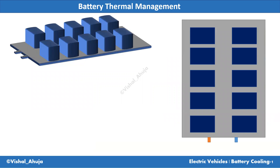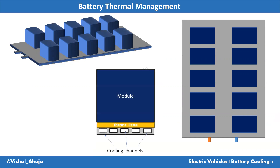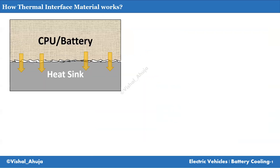This is a typical battery circuit layout. If you see, these are the blue color modules below which there is some kind of interface material that enhances the heat transfer, and below which there is a cooling plate. If you see a cell in detail, there is a cell module, below which there is a thermal pad, below which there is a cooling channel in aluminum which has some cooling channels.